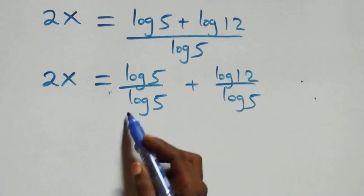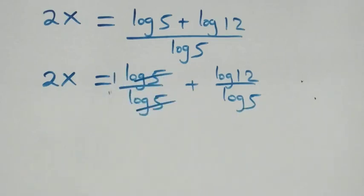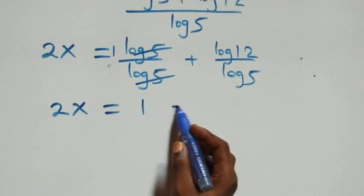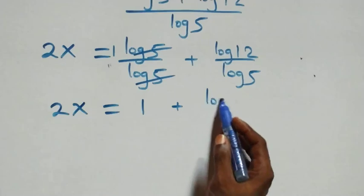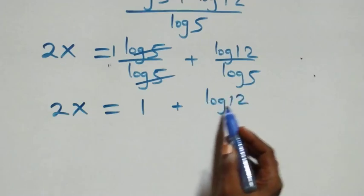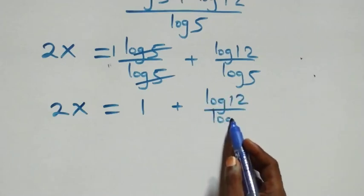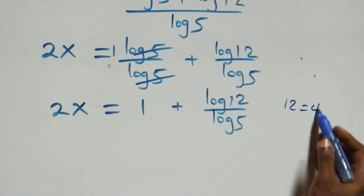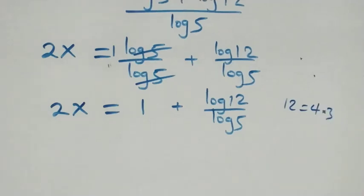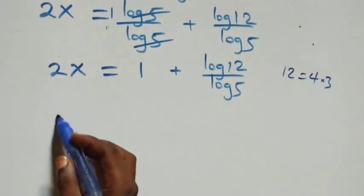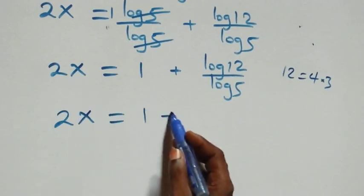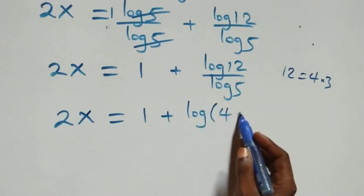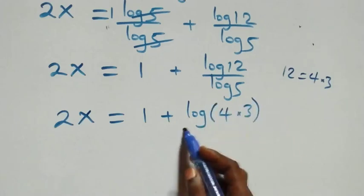Log 5 over log 5 cancels to give 1, so we have 2x equals 1 plus log 12 over log 5. Also, 12 can be expressed as 4 times 3, so 2x equals 1 plus log(4 times 3) over log 5.